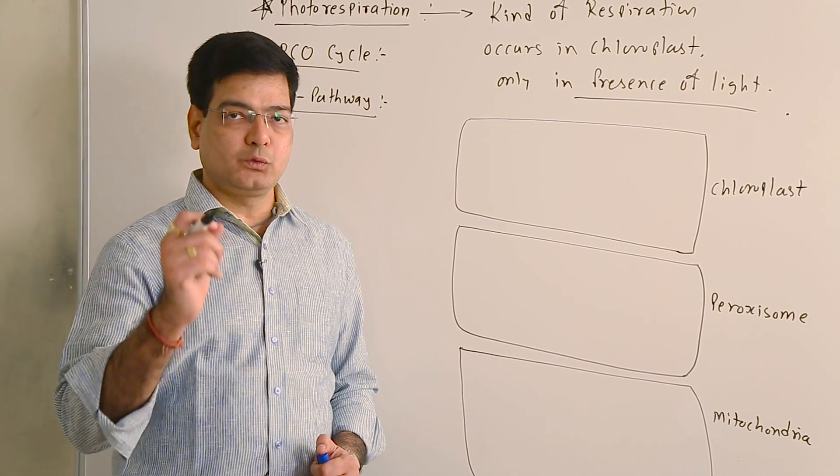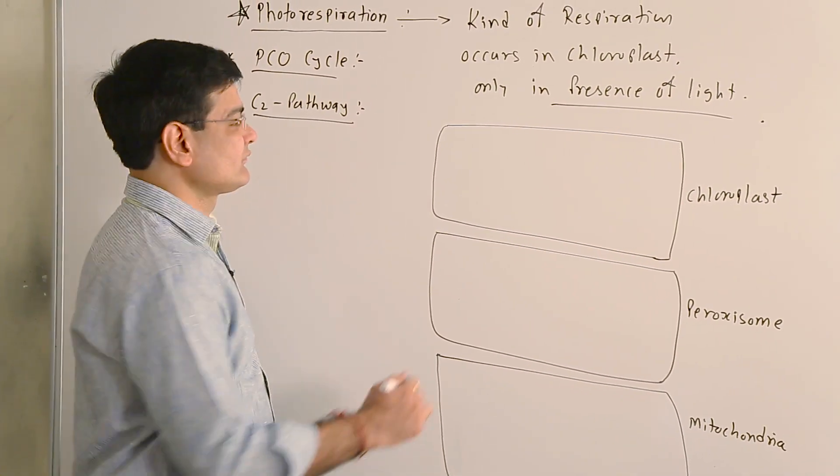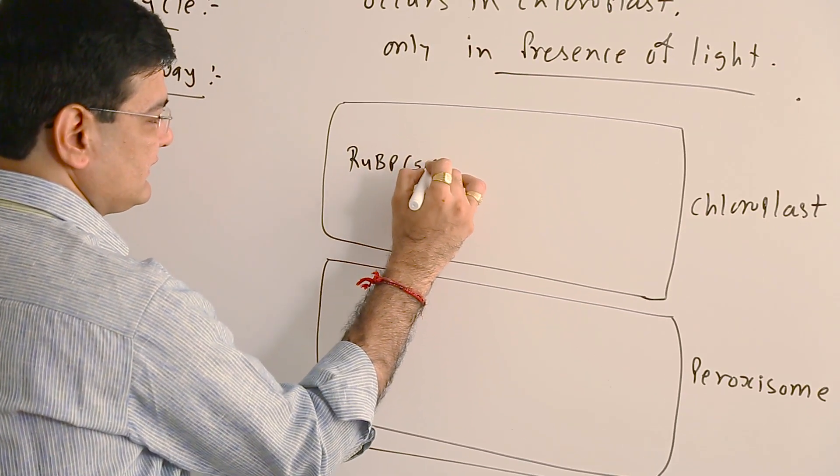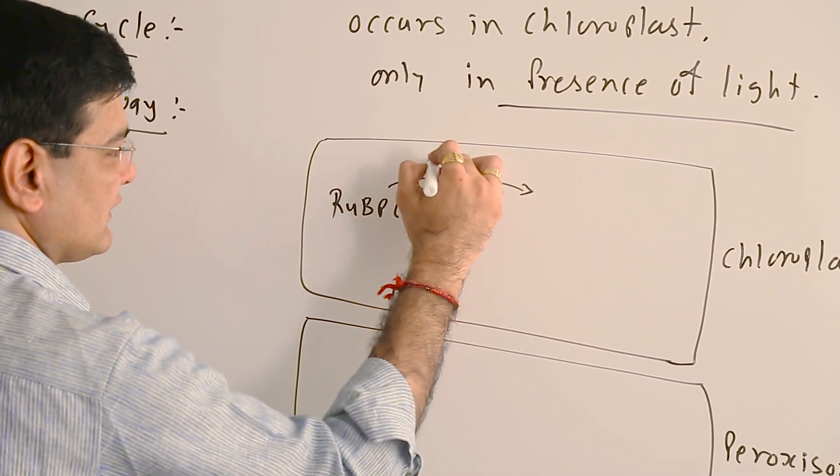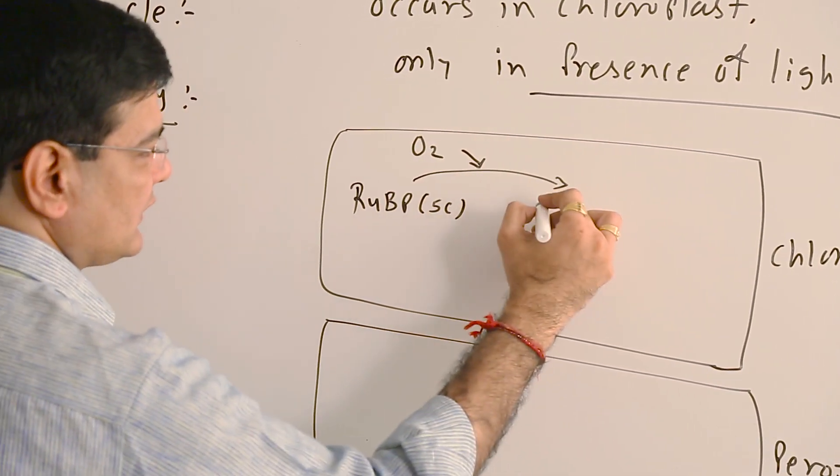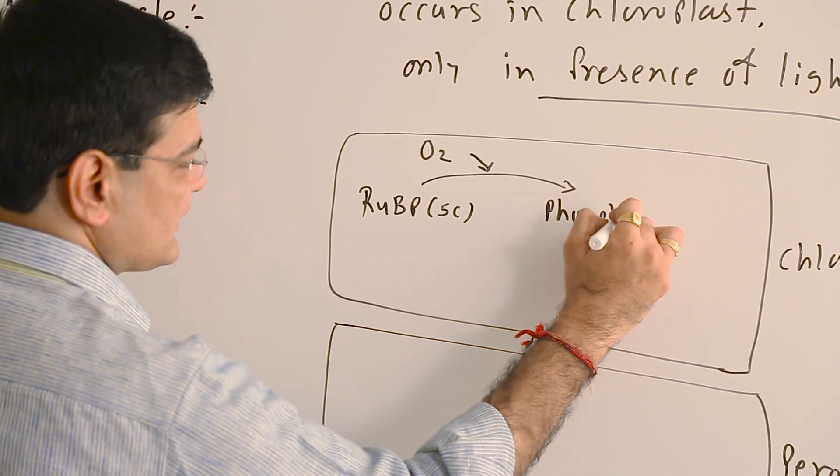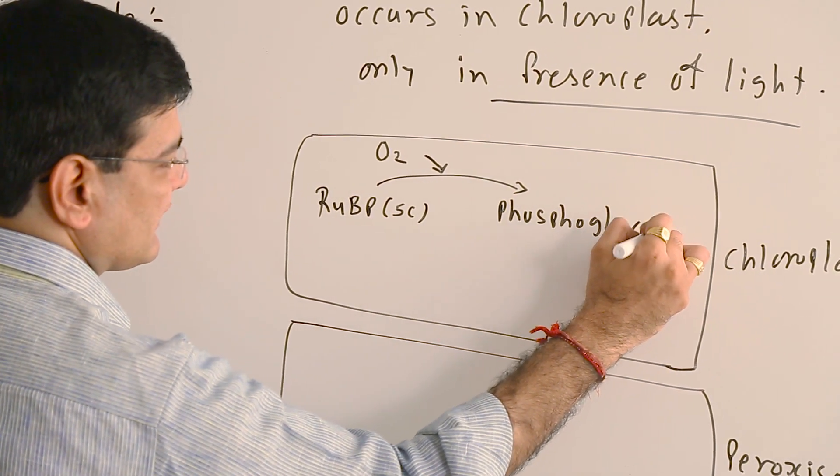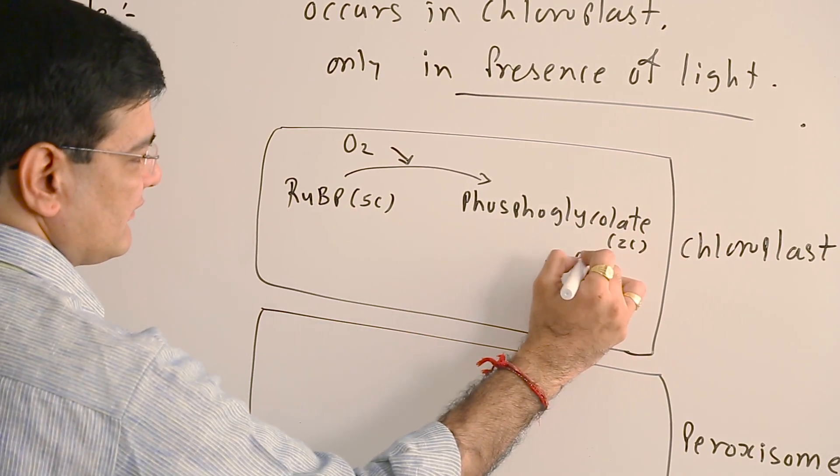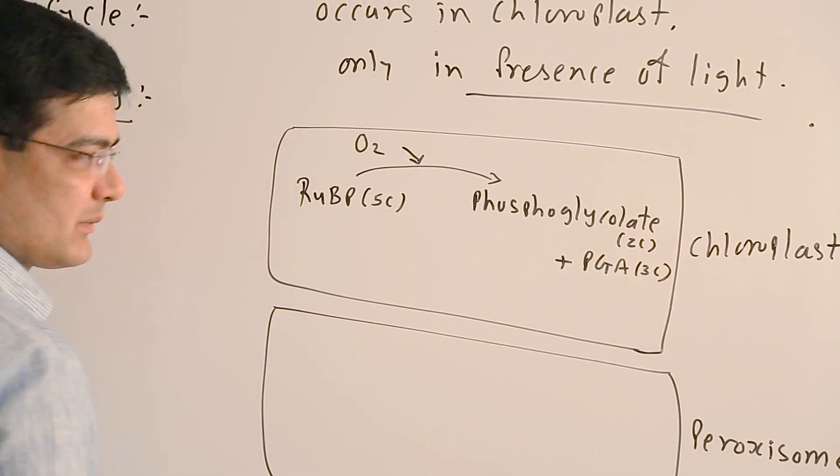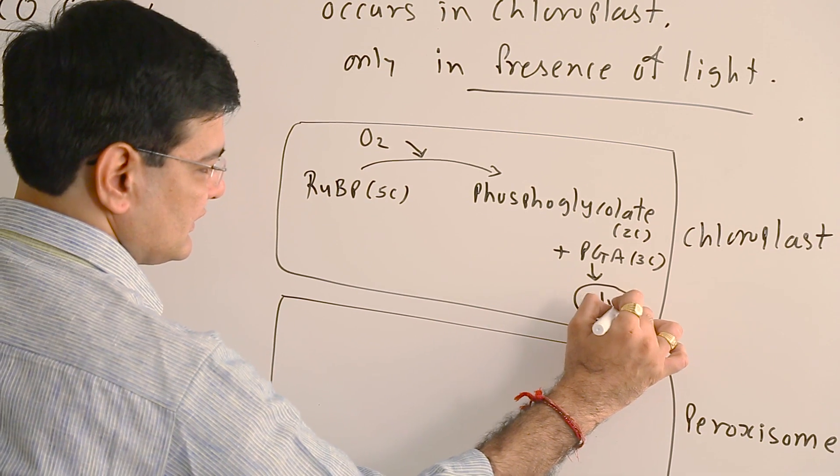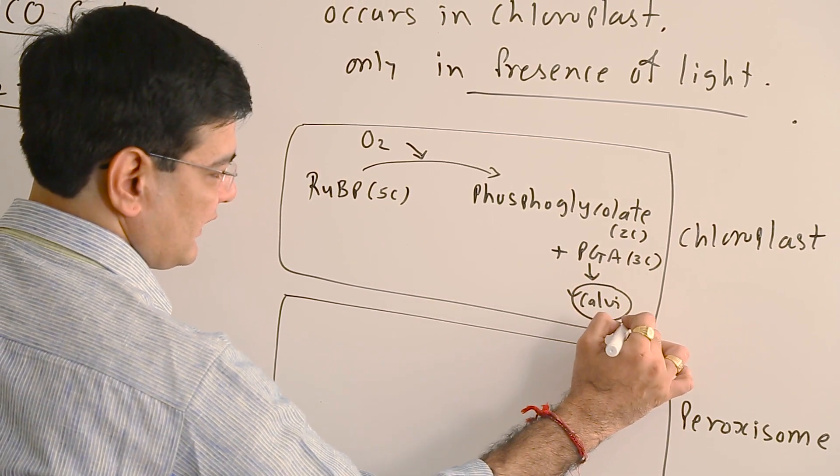Photorespiration or C2 pathway in detail. In the chloroplasts, ribulose bisphosphate is present, which is a pentose sugar. Oxygen reacts with RuBP in the presence of Rubisco to form phosphoglycolate, that is a two-carbon containing component, and one molecule of PGA containing three carbons. This PGA readily enters into the Calvin cycle to form sugar.